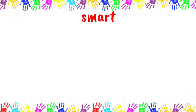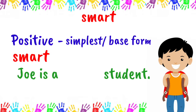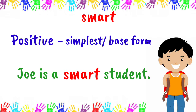Let's take 'smart' as an example. In the positive degree, you do not need to add anything to the adjective. So, the positive degree of 'smart' is still 'smart.' Let's use it in a sentence: 'Joe is a smart student.' In this sentence, 'smart' describes only one person, and that is Joe.